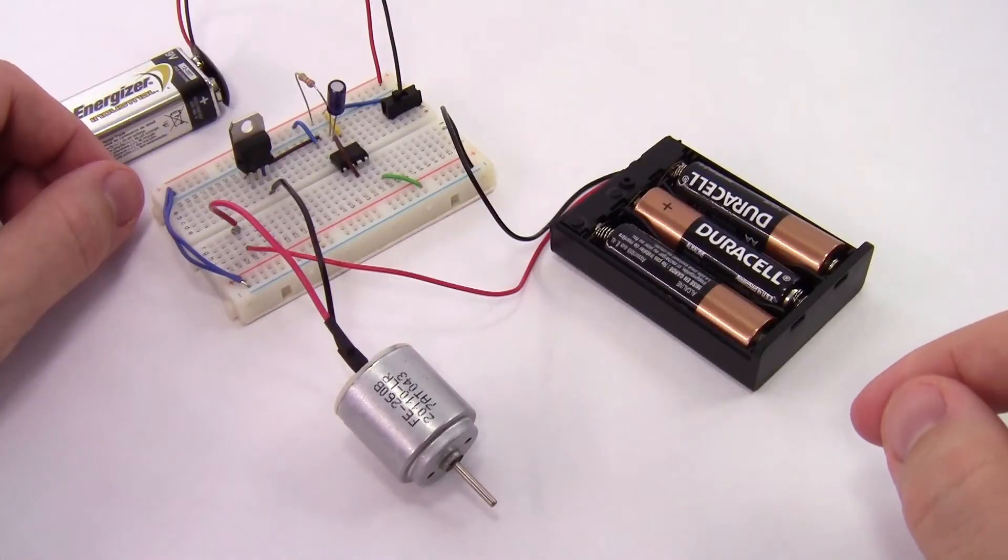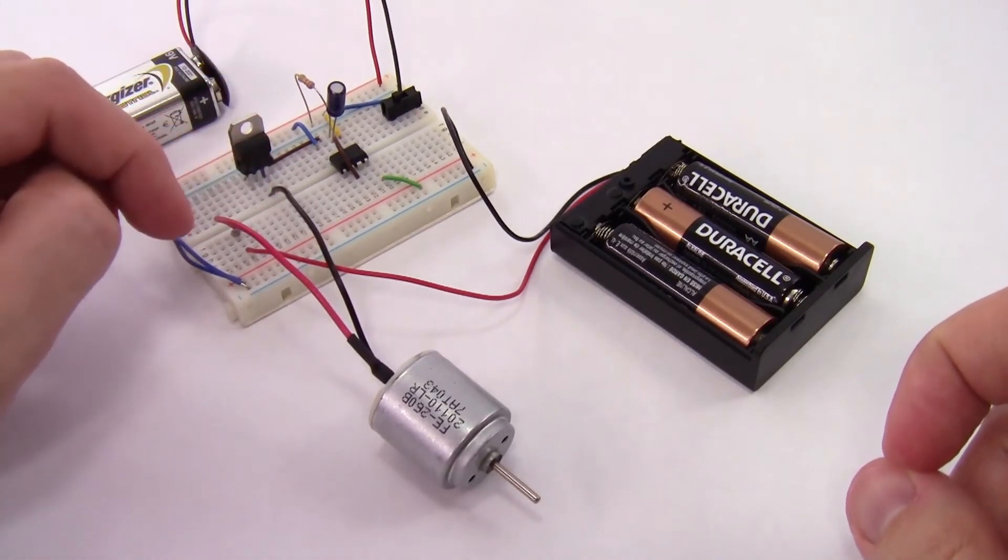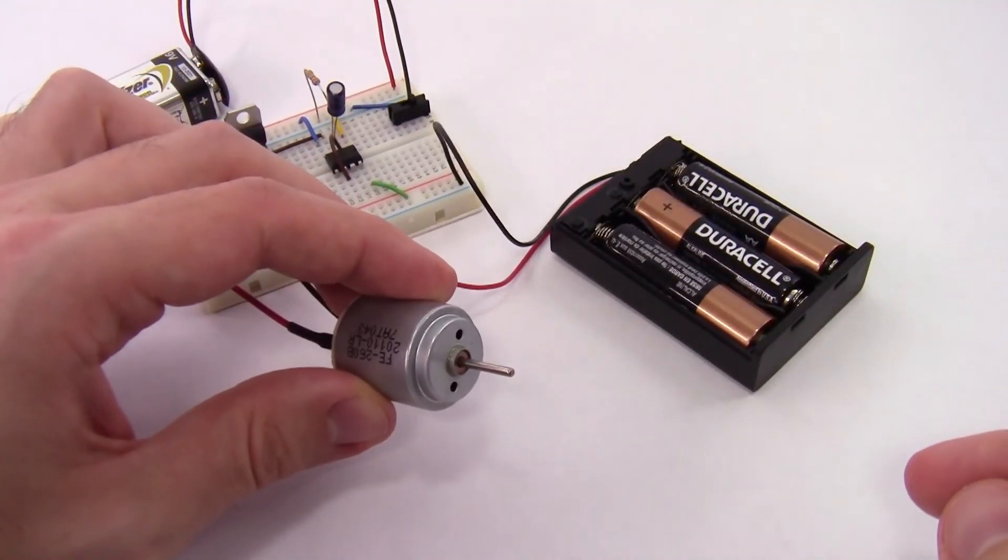So let's see that in action one component at a time. Here I've added an extra battery pack to give a little more juice to my motor. I've added a transistor to drive the motor using the 555 timer's output and you'll see that when I turn the switch on it takes a few seconds before the motor turns on.